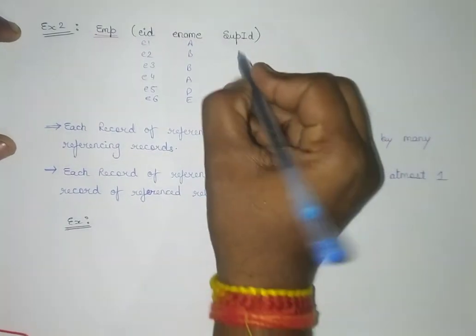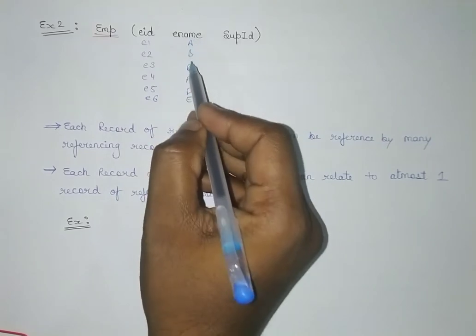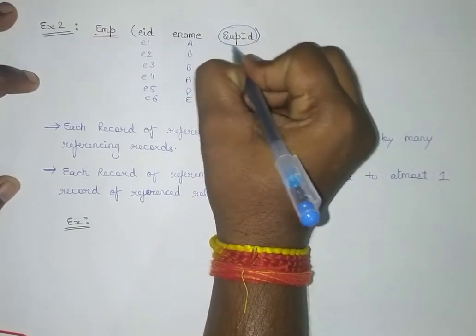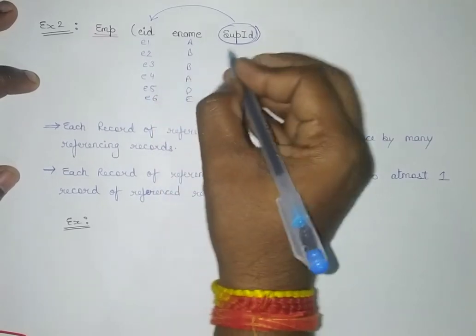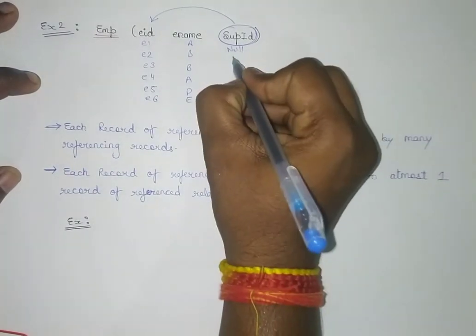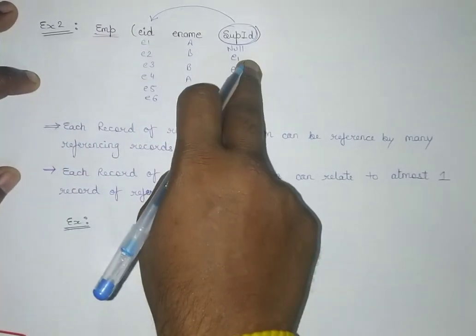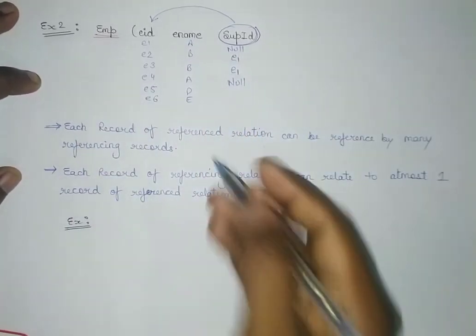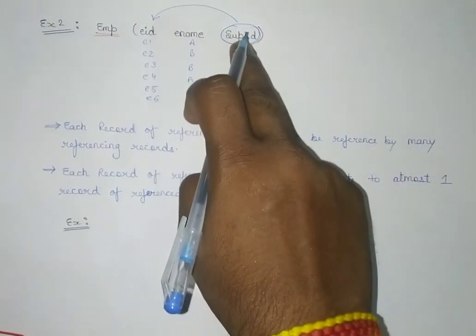Whoever the supervisor of any employee is will also be an employee of the company, so supervisor ID will be referencing the employee ID. For example, employee A may have no supervisor — he is a manager. Employee B is supervised by E1, employee 2 by E1, employee 3 by E1, employee 4 has no supervisor, employee 5 by E2, and employee 6 by E5.